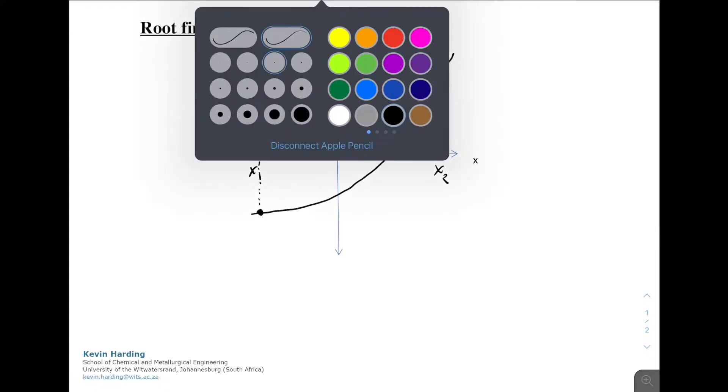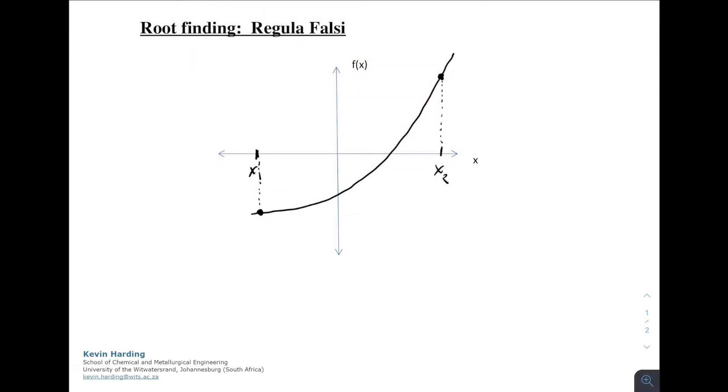The way that we do this now is that we assume that from this point on the left, the x1 value and the x2, where the y is negative and the y is positive, we can draw a straight line between these two and work out the equation of this line,